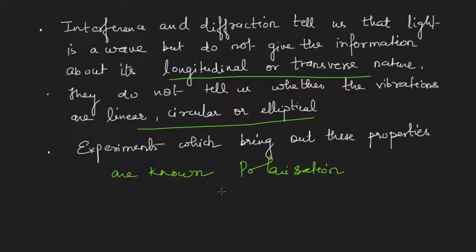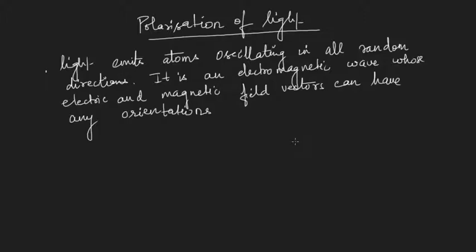You all know about ordinary light — the tube lights we have in our rooms. This ordinary light emits atoms which are oscillating in all random directions. Basically, light is an electromagnetic wave whose electric and magnetic field vectors can have any orientation. Such kind of light, where the electric or magnetic field vector can have all possible orientations, is known as unpolarized light.